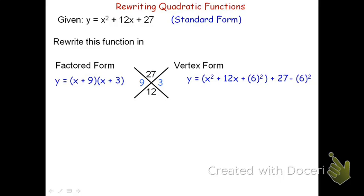I can now complete the square within the parentheses and rewrite x squared plus 12x plus 6 squared as the quantity x plus 6 squared. Outside the parentheses, I simplify plus 27 minus 6 squared as plus 27 minus 36. Combining like terms: 27 and negative 36 gives minus 9. So the vertex form is y equals the quantity x plus 6 squared minus 9. This gives the vertex of the parabola as negative 6, negative 9.